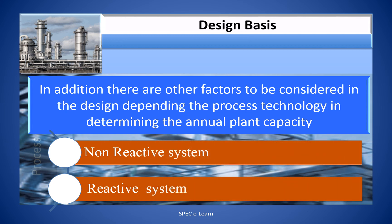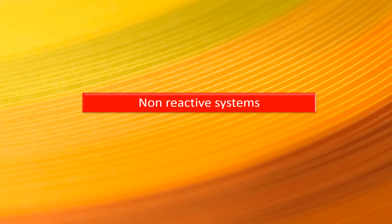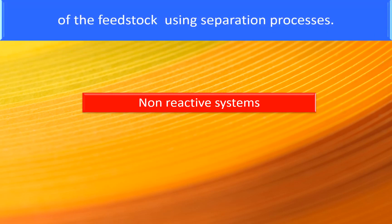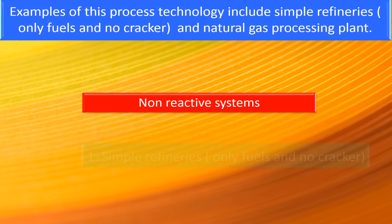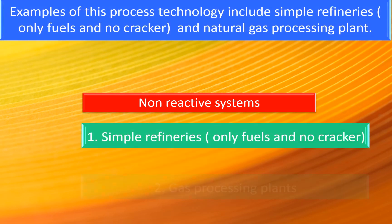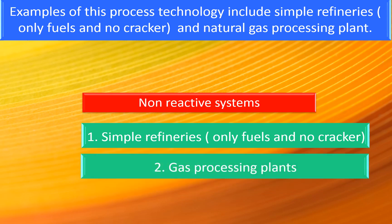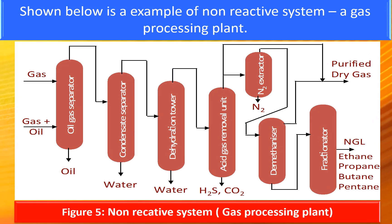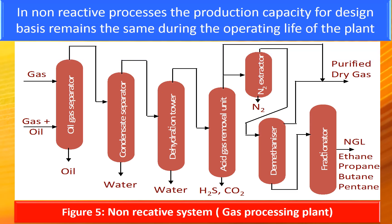Non-reactive system: In this process, there are no reactions involved, and chemical processing involves only processing of the feedstock using separation processes. Examples include simple refineries and natural gas processing. In non-reactive processes, the production capacity for the design basis remains the same during the operating life of the plant.